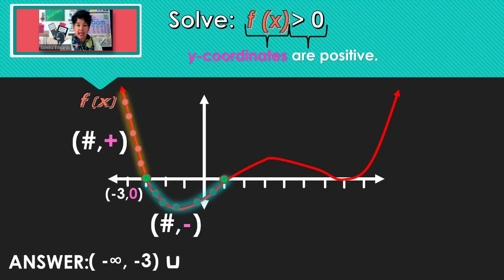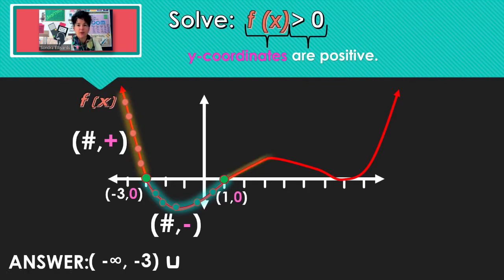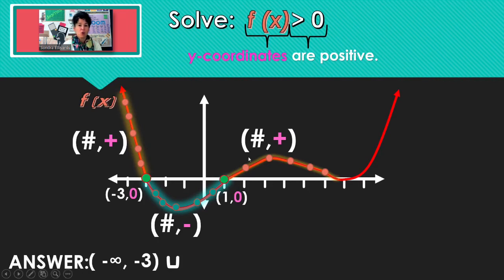Here's our next x-intercept at 1 comma 0, and the y-coordinate is 0. We're looking for y's that are positive, so that is not part of our answer. Keep looking — all of those points, the y part of the coordinate, are positive.